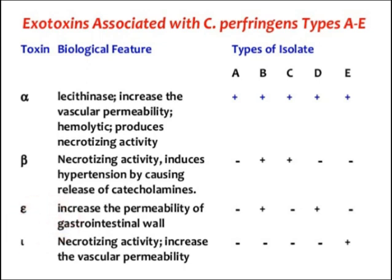Iota toxin is found only in Clostridium perfringens type E — not in types A, B, C, or D. Iota toxin also has necrotizing activity and increases vascular permeability. When vascular permeability increases, it ultimately leads to death.